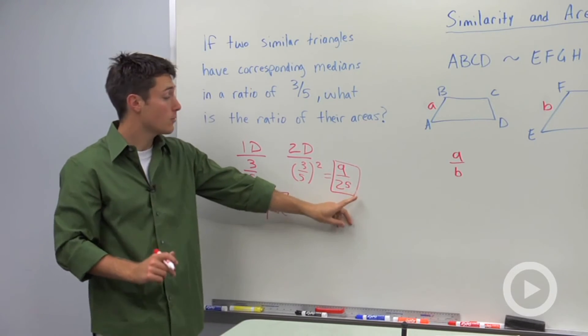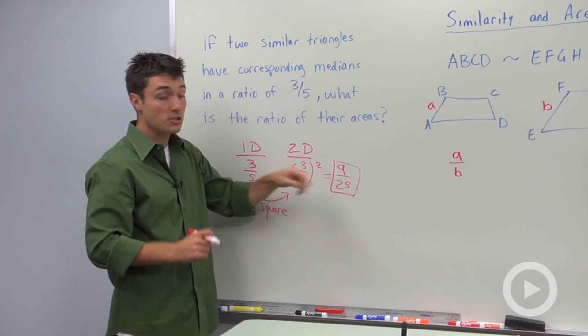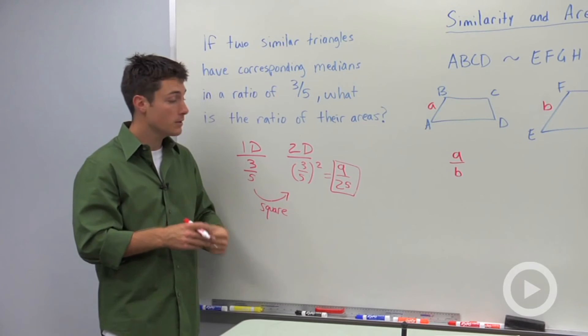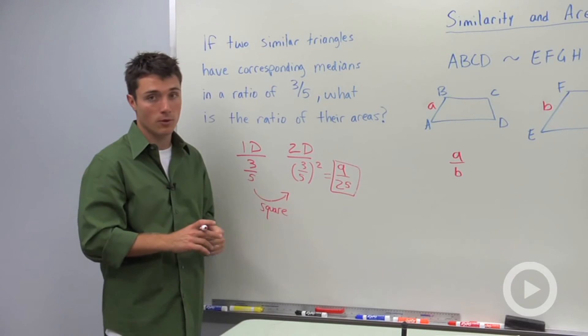This is not saying that the area is nine and the area is twenty-five, it's just saying that when you write a ratio of their areas, it will be nine to twenty-five.